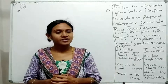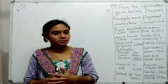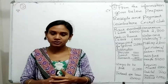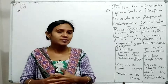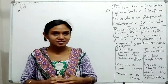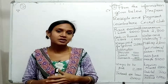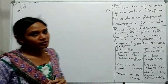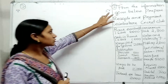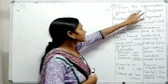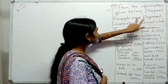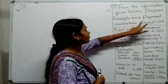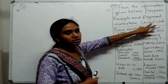Hi students. In the last video we covered the Receipt and Payment Format and Registration Problems. Now we will talk about Exercise Problems. Exercise Number 2, Question Number 2 is: From the information given below, prepare the Receipt and Payment of Coimbatore Cricket Club as on 31st March 2019.